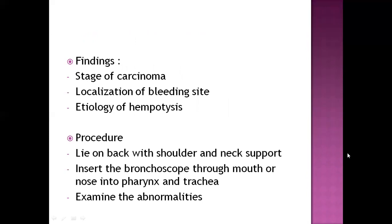For the bronchoscopy procedure, the patient lies on their back with shoulder and neck support. We insert the bronchoscope through the mouth or nose into the pharynx and then reach up to the trachea, where we can examine all the abnormalities that were suspected.